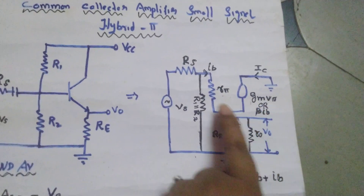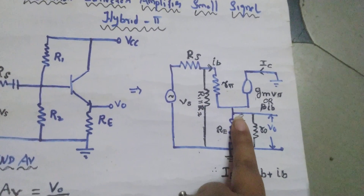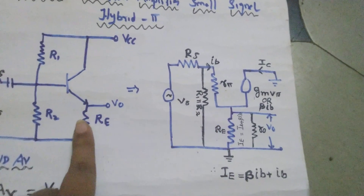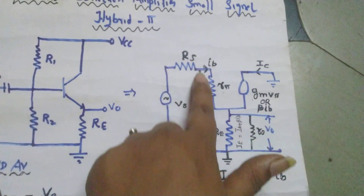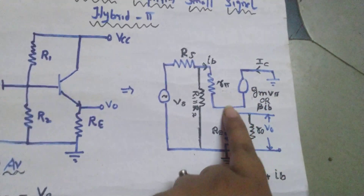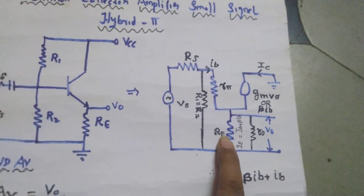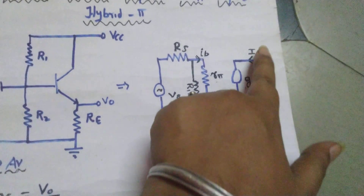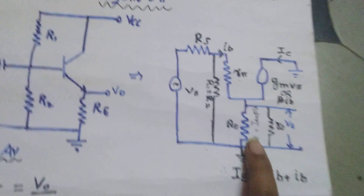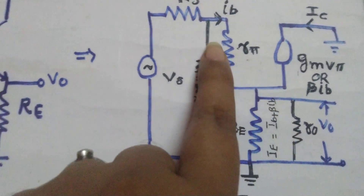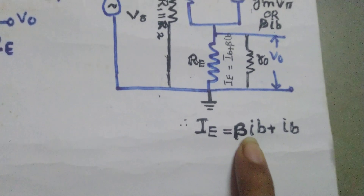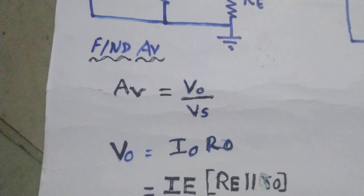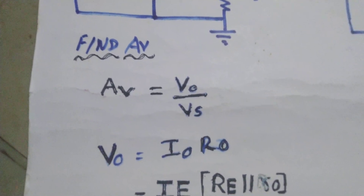The controlled current IC equals β·IB, also written as gm·Vπ. The current IB flows through R-pi. Both IB and IC flow through the emitter resistor, so the emitter current IE = IB + IC. Since IC = β·IB, we get IE = IB + β·IB. Taking IB common: IE = IB(1 + β).